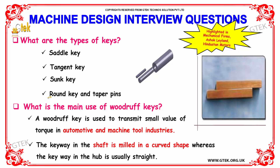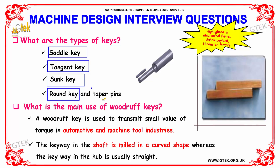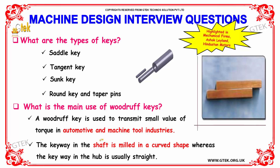What are the types of keys? The types of keys are: saddle key, tangent key, round key, and taper pins. A Woodruff key is used to transmit small values of torque in automotive and machine tool industries. The keyway in the shaft is milled in a curved shape, whereas the keyway in the hub is usually straight.